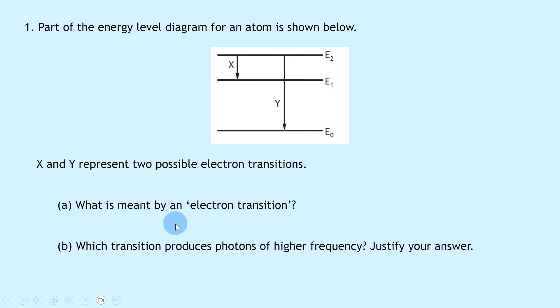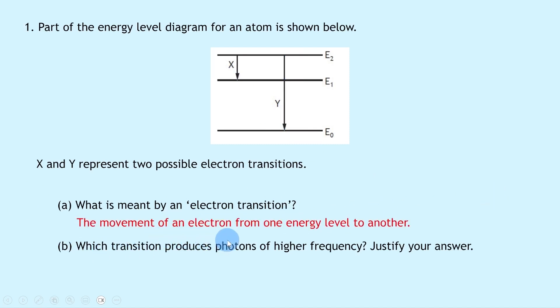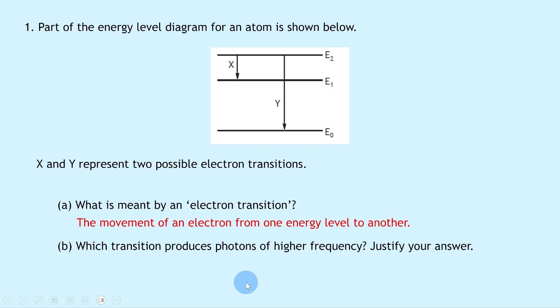Part a says: what is meant by an electron transition? Remember from the notes that an electron transition is simply the movement of an electron from one energy level to another.